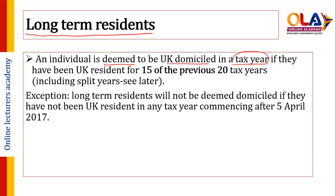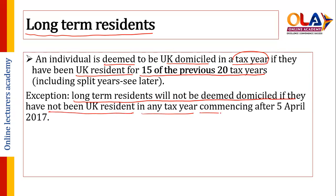The first situation is long-term residence. An individual is deemed to be UK domicile in a tax year if they have been UK resident for 15 of the last 20 tax years. However, a long-term resident will not be deemed domicile if they have not been UK resident in any tax year commencing after 5th April 2017.